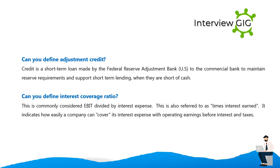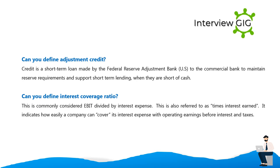Can you define adjustment credit? Adjustment credit is a short-term loan made by a Federal Reserve Bank to a commercial bank to maintain reserve requirements and support short-term lending when the commercial bank is short of cash.